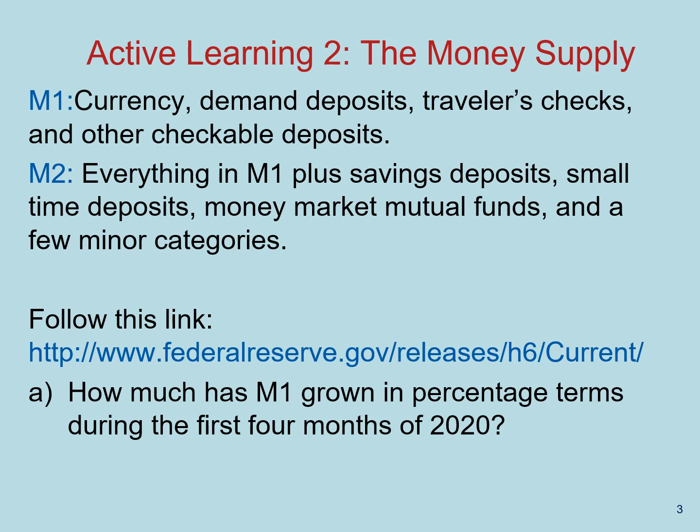As an active learning exercise, follow the link to the Federal Reserve releases. In there, you'll find the measurements for M2 and M1 currently available. I want you to look at the seasonally adjusted series for M1 and calculate the growth of M1 in percentage terms during the first four months of 2020. This has been a very interesting time with a large growth of the money supply over that period, so go look at it and calculate the percentage term growth.